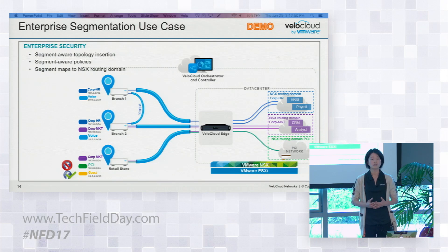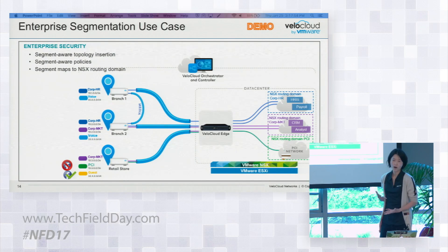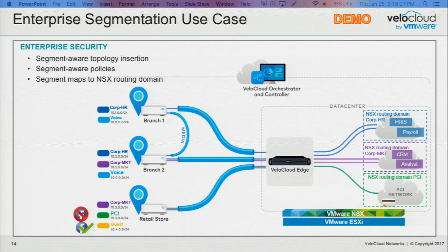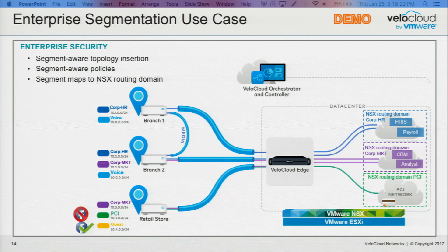Next: segment-aware policies. Different segments may have different requirements. You want to enable some services for some segments but disable them for others. Or you may want to enable different priorities for different applications in different segments. For example, in the guest segment you want to enable the firewall, and in the PCI segment you want to disable the firewall — which can be easily done from the UI. We believe this is one of the key differentiators from other SD-WAN providers, where you have to configure global security policies for all segments.